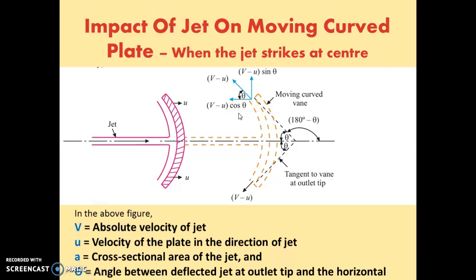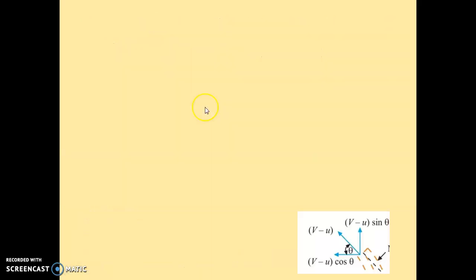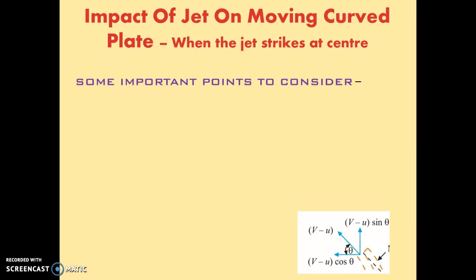We are going to find the force applied by the jet in the direction of the jet, that is in the x-direction. The initial velocity in the x-direction is v minus u, because the jet strikes the plate with a relative velocity of v minus u. After striking, the jet exits and the final velocity in the x-direction is v minus u times cos theta, but since it acts opposite to the direction of the jet, it is taken as minus (v minus u cos theta).